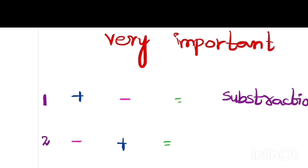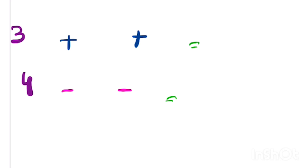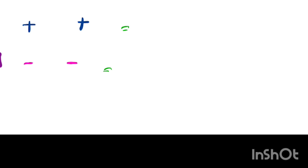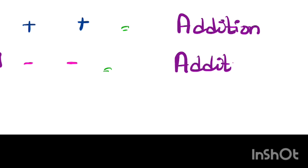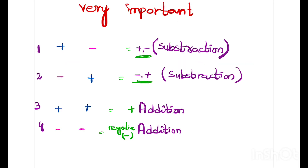For example, if you have 5 and minus 3, you subtract them. The sign will be the one with the bigger number: 5 is bigger and positive, so the answer is positive. If you have both positive numbers or both negative numbers, you add them. Both positive means a positive sign; both negative means a negative sign — but you still add the numbers.